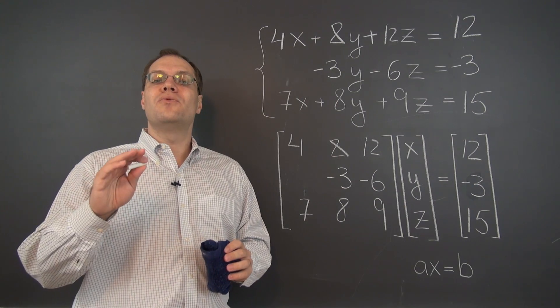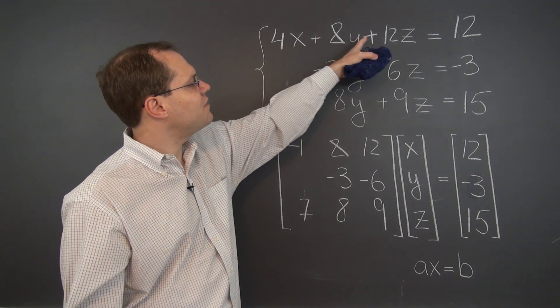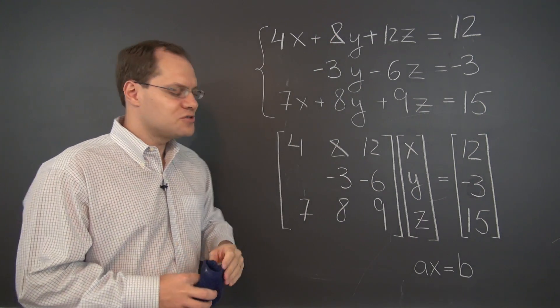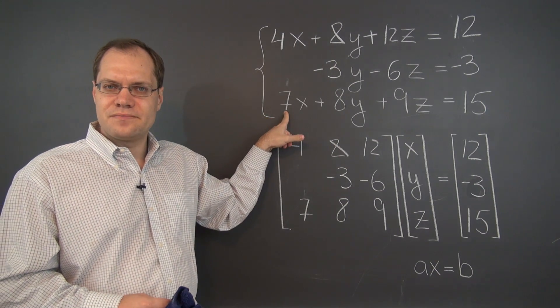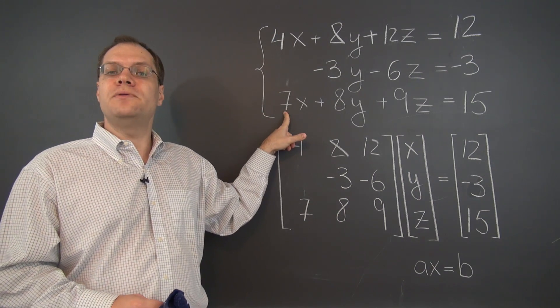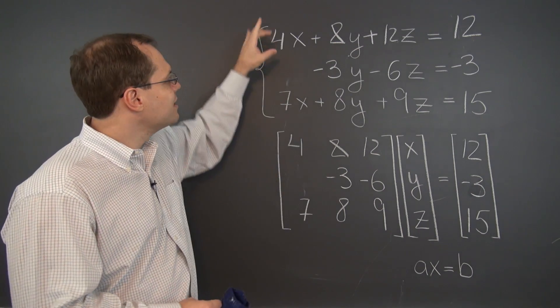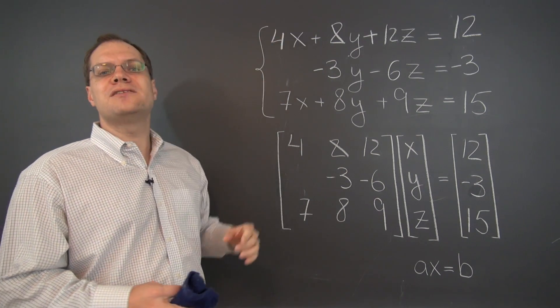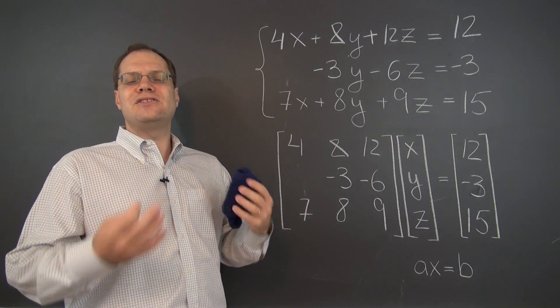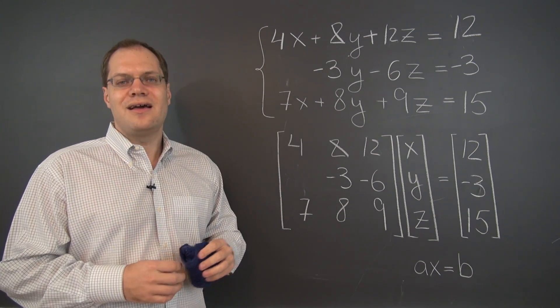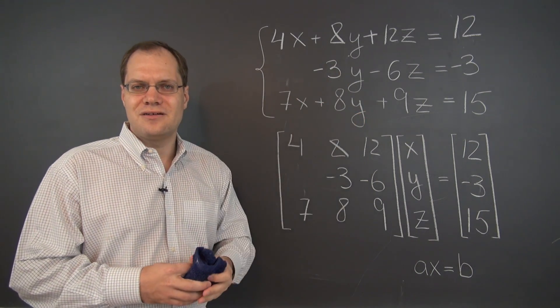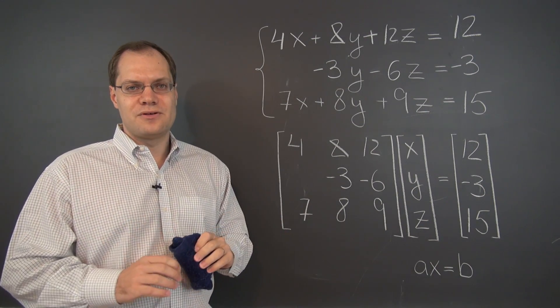So here's an interesting thing. What we can also do now is go ahead and divide the first equation by 4 again. So it goes back to its original form. So we can get it ready for eliminating the 7. Because right now what I would need to do to prime it for eliminating this 7 would be to multiply by 7 fourths. So that I have 7 in this position. And multiplying by 7 fourths could be a little cumbersome. So let's just divide it by 4 and then start again. Multiply the first equation by 7 and subtract it from the third equation.